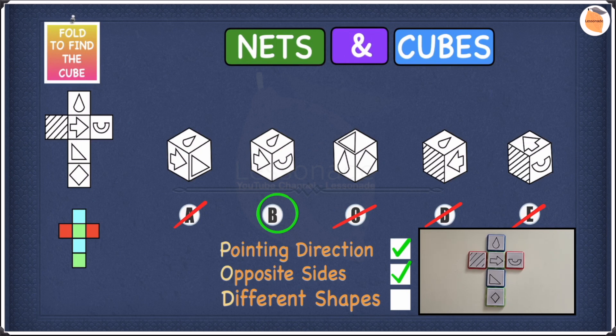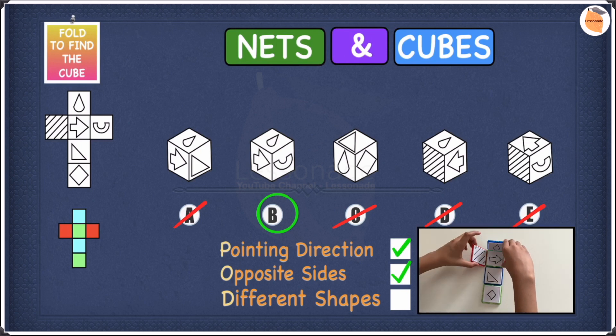Now let's check if B is right by folding the net. And as you could see, the cube for B is exactly the same, so that means our answer to this question is B.